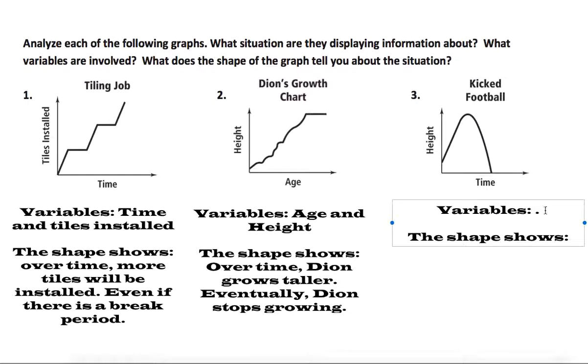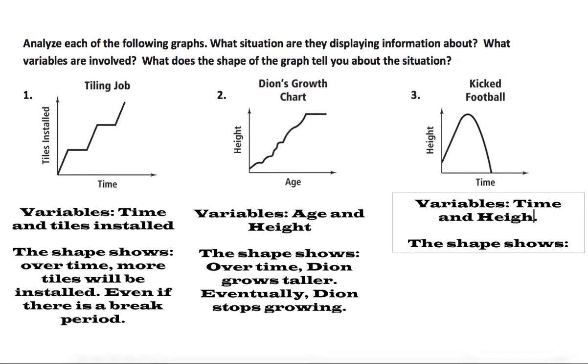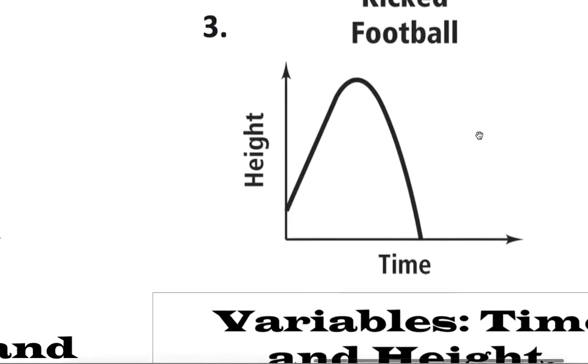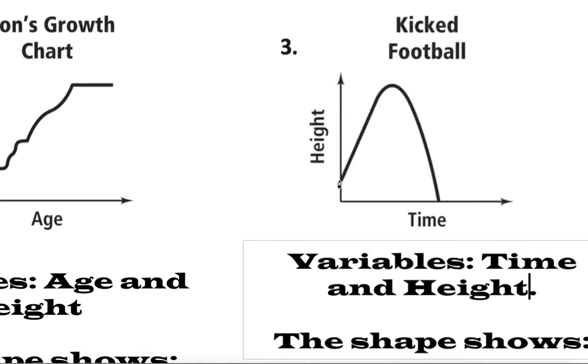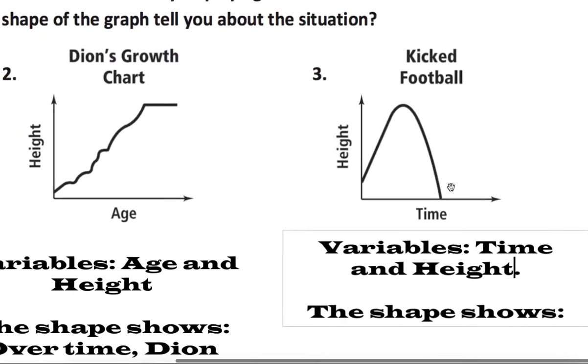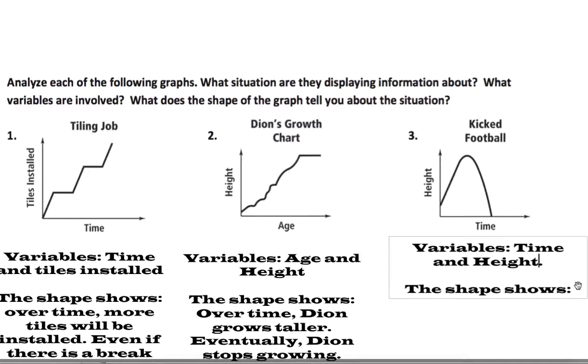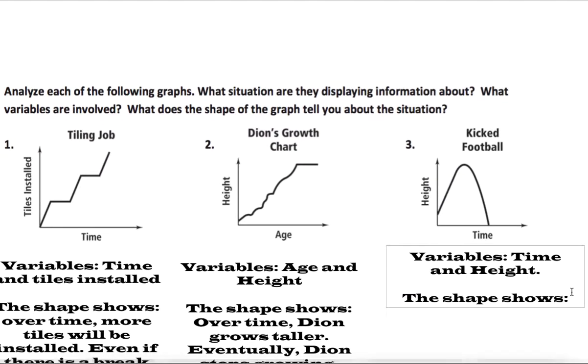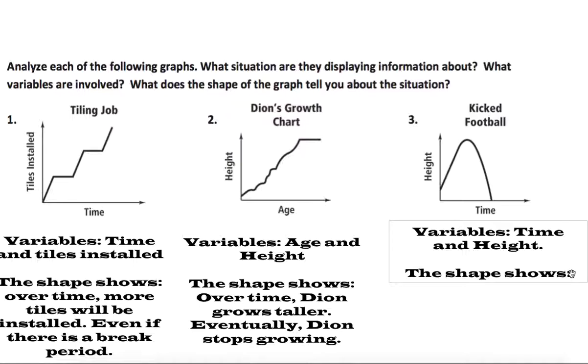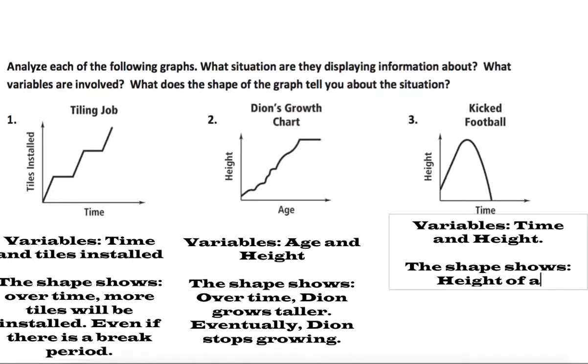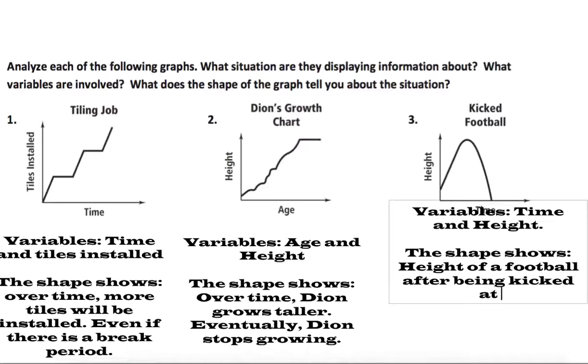Finally for the ballers out there, we have variables of time and height. What do you think this shape is going to show? Looks like it starts at some height, it goes up and then goes down. What do you think the shape shows? Think about this in a football sense. You could say that the shape shows the height of a football after being kicked at, I don't know, this is probably waist height. Yeah it's going up into the air but it's already in the air above ground, so you could say after being kicked at waist height. I guess you could think of this as a punt.